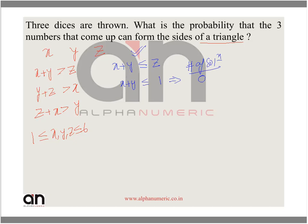Similarly, if z is 2, x plus y must be less than or equal to 2. The only possibility is x equal to 1 and y equal to 1, so there is 1 solution. If z is 3, then x plus y is less than or equal to 3. The possibilities are (1,1), (1,2), and (2,1) — a total of 3 solutions.